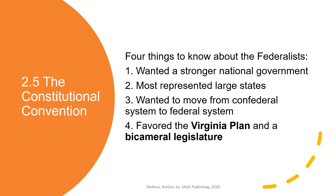The Federalists wanted a stronger national government. They wanted the states to be more represented and wanted to move away from a confederal system to a federal system. There were two structures in place at that time. One was called the Virginia Plan, the large state plan, which called for a bicameral — meaning two houses in the legislature — which is what we have today with a House of Representatives and a Senate comprising our U.S. Congress. The large state plan, the Virginia Plan, was what the Federalists were primarily arguing for.